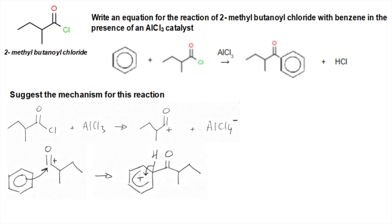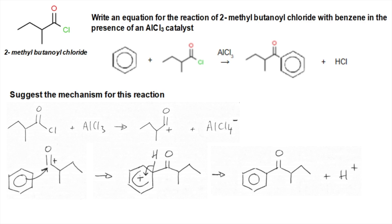A couple of things to note here: the partial electron cloud you draw covers five carbon atoms and needs to be open where the substitution is taking place. Don't forget your positive charge. It then stabilises itself by a pair of electrons coming from the carbon-hydrogen bond going back in to reform the delocalised ring of pi electrons, and that hydrogen comes off as H+. Then the H+ ion and the AlCl4- ion combine to reform the catalyst and HCl.